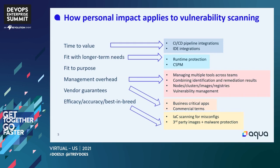Lastly, in terms of vulnerability scanning — best in breed, for example with infrastructure as code — when we talk about decision points, they're not mutually exclusive. We were talking before about fitting with longer term needs and fitting to purpose; that also has to do with best in breed efficacy and accuracy. So they're not mutually exclusive by any means.